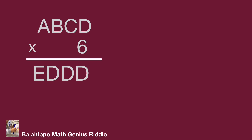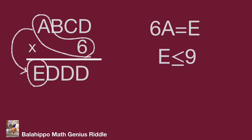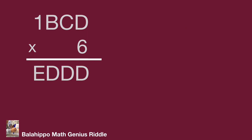Let's go back to the given information. First, go for the easy part. Focus on the first digit: A times 6 equals the first digit E in the new number. We list 6A = E. E should be less than or equal to 9, and A not equal to E. From the equation 6A = E, A should be less than or equal to 1 and A not equal to 0. So the only value for A is 1. Then rewrite our given information as 1, B, C, D times 6 equals E, D, D, D.